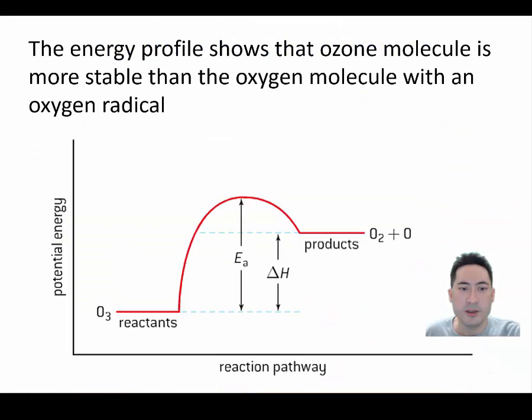This diagram here just shows you that the ozone molecule itself here is actually more stable than the oxygen and the oxygen radical here. There should be a dot there, because the bonds here, the one and a half bonds here, are for lower energy.